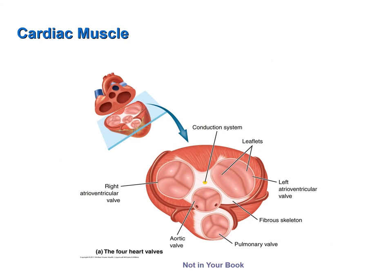While action potentials can move throughout an entire chamber, they do not move from atria to ventricles or from ventricles to atria. That's because there are no intercalated discs connecting cells of the atria with cells of the ventricle. In fact, there is a fibrous skeletal barrier that electrically separates the cells of the atria from the cells of the ventricles, as shown in this figure from your book.